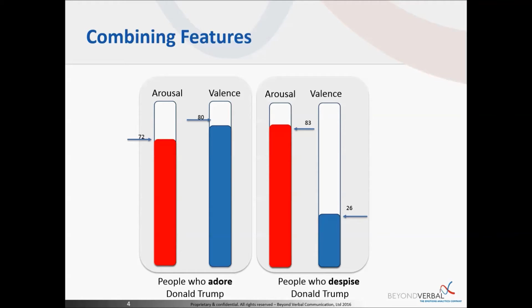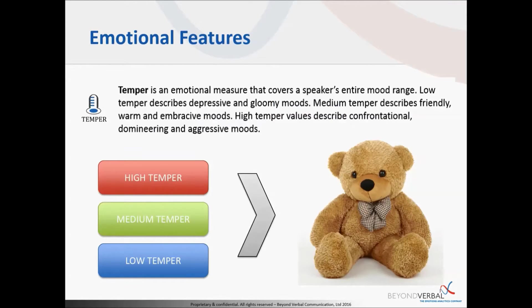The next feature is called temper, which analyzes the overall temperament of the speaker. It can be measured on a score of 0 to 100, or clustered into three main groups: high temper, associated with confrontation or aggressiveness; medium temper, associated with more abrasive or happy mood groups; and low temper, associated with somber or depressive feelings.